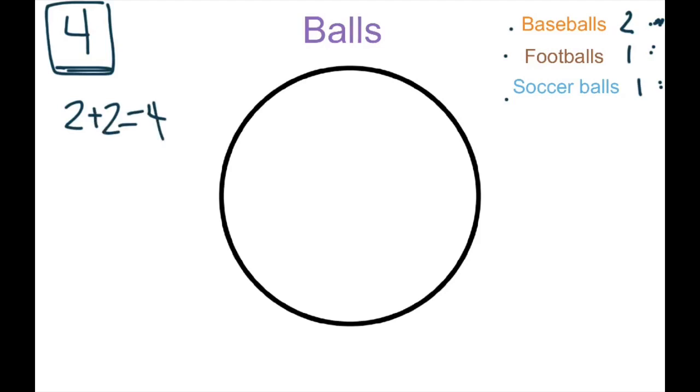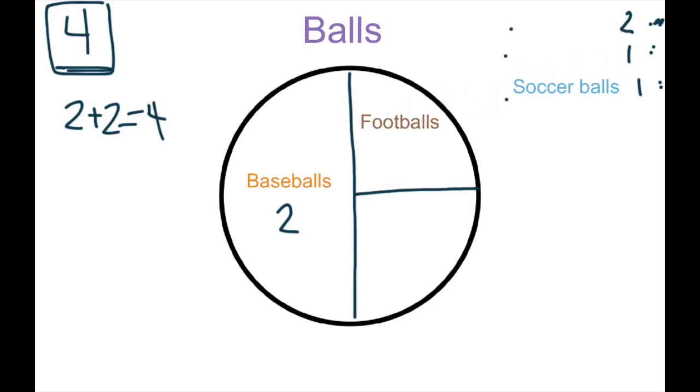So, the baseballs is going to be half of our circle. So, let's grab baseballs and we'll put them over here. There's two of them. Now, I can't put footballs and soccer balls all in this one big piece together. I have to split it up. So, what it's going to look like is this. There's one football and one soccer ball.